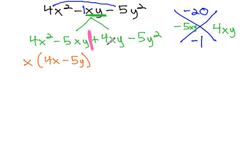On the right side, we see a GCF of just y. This leaves behind 4x minus 5y.